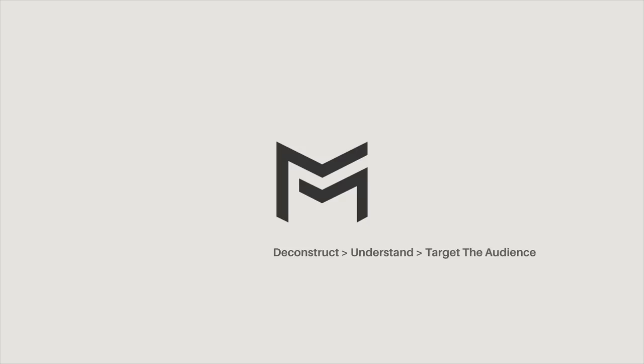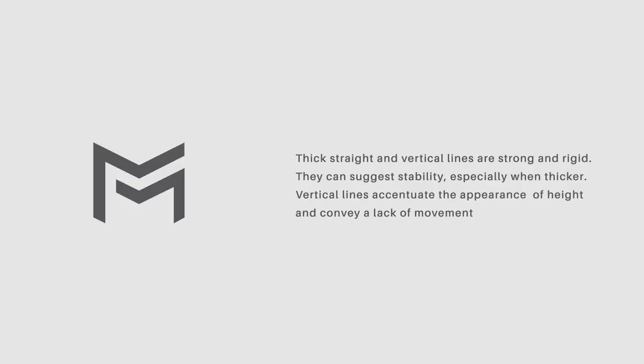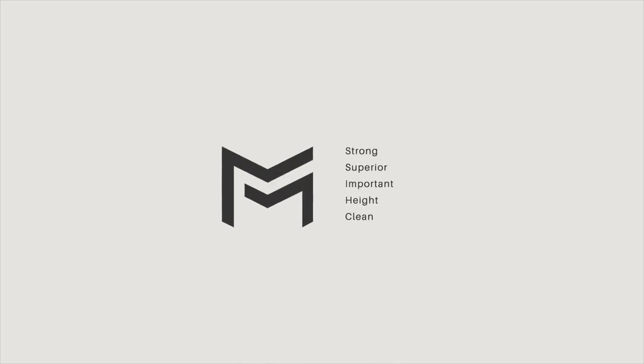Here we have the first logo design we're going to take a look at. When choosing fonts, it's important to really deconstruct the logo itself and understand what the style is trying to communicate. With this example, straight lines are used and they're quite thick, indicating a sense of strength and a robust nature. It's quite a static and firm design that is also simplistic, adding a sense of superiority and cleanliness. The logo mark here is independent, strong, and minimal, so the typeface needs to reflect just that.